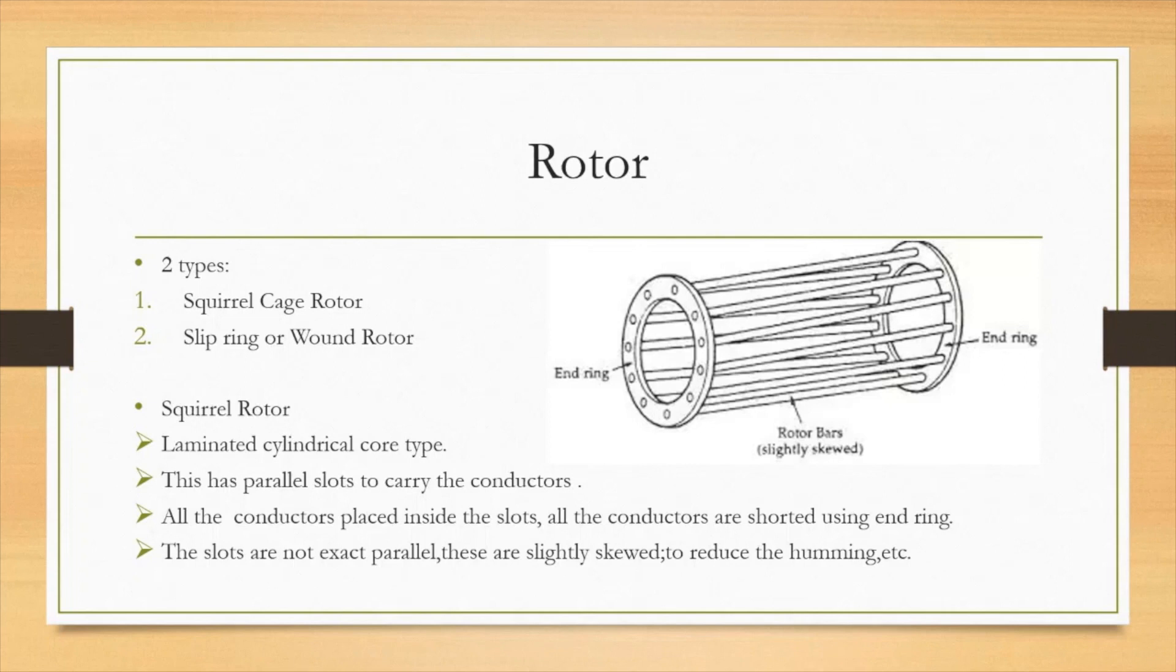In this squirrel cage rotor, this is laminated cylindrical core type with parallel slots to carry the conductor. All the conductors are placed inside the slot and shorted using the end-rings. We can't add external circuit and resistances to this because it is shorted using end-ring. The slots are not exact parallel. You can see this in this diagram. These are slightly skewed to reduce the humming and noise.